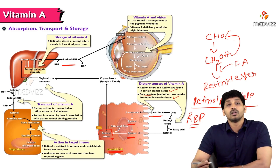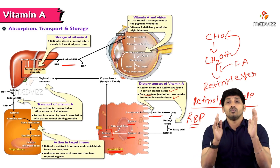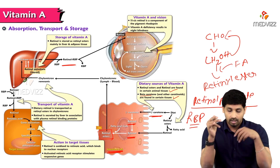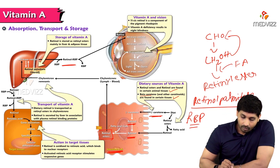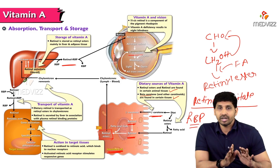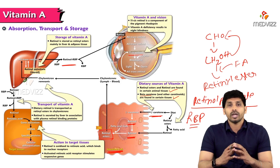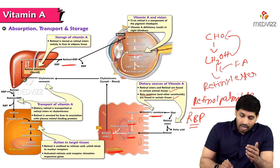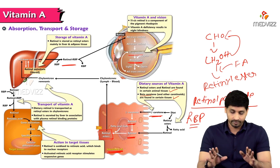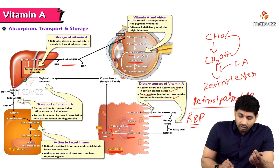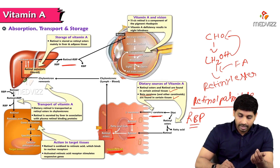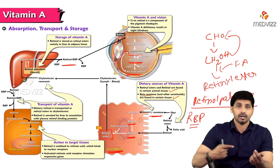The form of vitamin A responsible for vision is the aldehyde form — that is retinal. Rhodopsin is a combination of a protein part (opsin) and a non-protein part (11-cis retinal). When these two parts combine, they form rhodopsin. When light falls on rhodopsin, it generates a nerve impulse that is carried to the brain, aiding vision. The 11-cis retinal is then converted to trans-retinol, which is reconverted back to 11-cis retinal to regenerate the visual cycle.